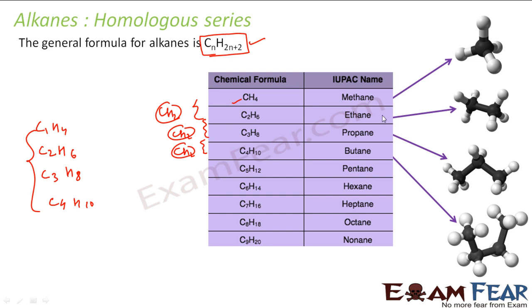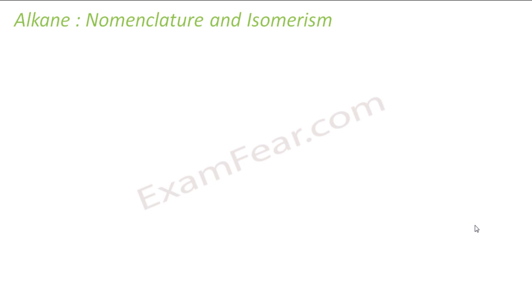This is my homologous series. This is how methane looks. This is how ethane looks — 2 carbons, 6 hydrogens. This is how propane looks — 3 carbons and 8 hydrogens. And this is how butane looks — 4 carbons and 10 hydrogens.